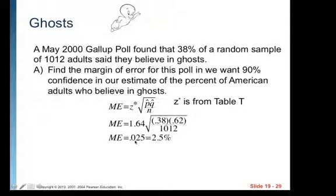And so we get a margin of error of 0.025. Since it says we want to estimate the percent of adults instead of the proportion of adults, we can do our margin of error as a percent. So it would be 2.5%.